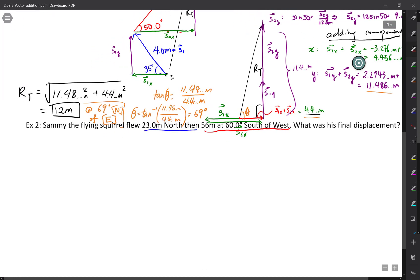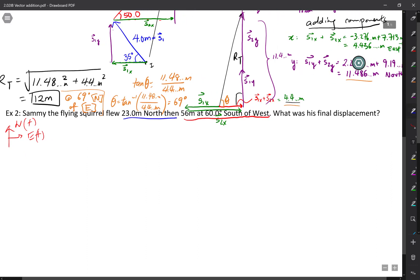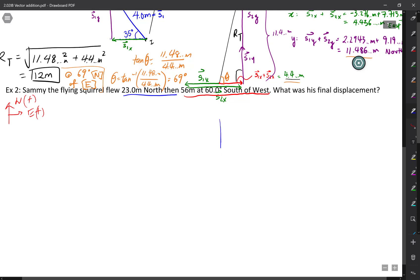Then Sammy the Squirrel flew 56 meters at 60 degrees south of west. So before we do everything else, let's draw a little compass needle to orient ourselves. I'm going to use north as positive and east as positive and vice versa for the other directions. Starting with the north, I'm going to draw Sammy going north 23 meters.